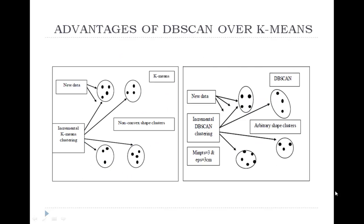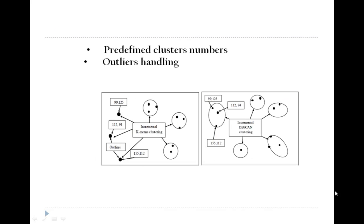Let us know the advantages of DBSCAN over K-means. The algorithm DBSCAN has predefined cluster numbers and handles outliers better. K-means doesn't handle clusters which have arbitrary shape.